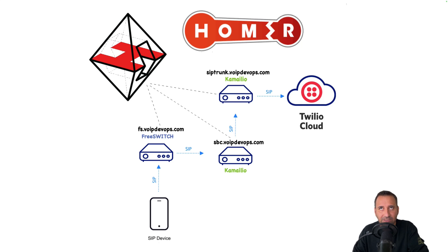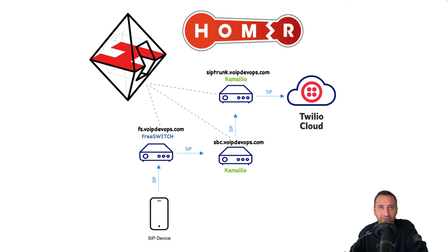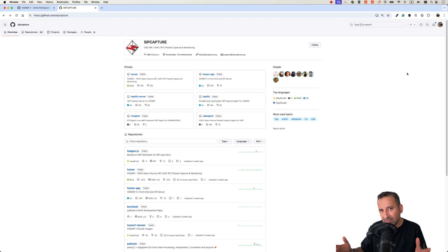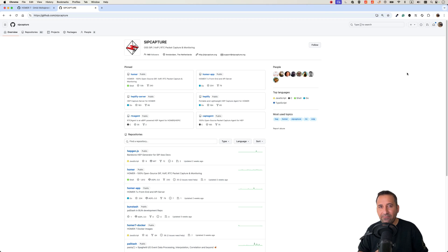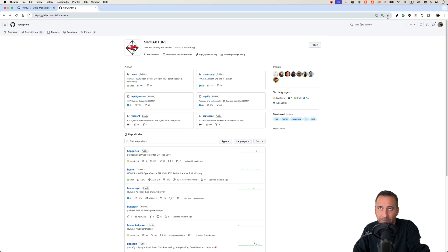There are two main methods to capture SIP traffic. Many systems like FreeSWITCH, Kamailio, and OpenSIPS have built-in HEP support and can send traffic directly to Homer. We also have a capture agent that you can install — it will sniff and capture SIP traffic and forward it to your Homer system. You can find how to install the capture agent from the sipcapture GitHub. I have my own version in my GitHub as well, with a link in the description.